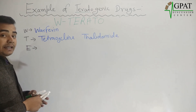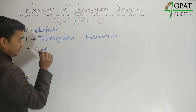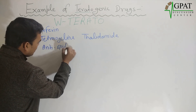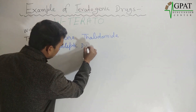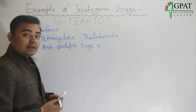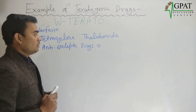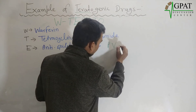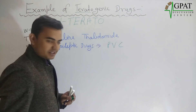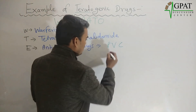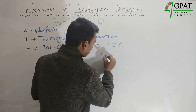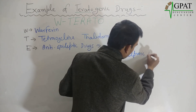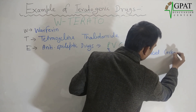Next, E — from E, majorly all the anti-epileptic drugs which cause teratogenicity. Remember one word: PVC — like PVC pipes. P is for phenytoin, V is for valproic acid, and C is for carbamazepine.